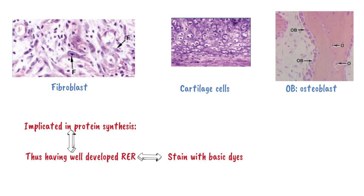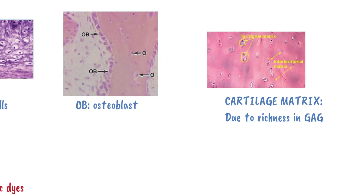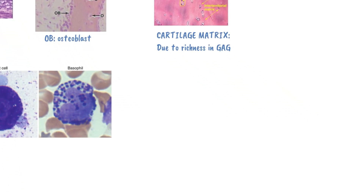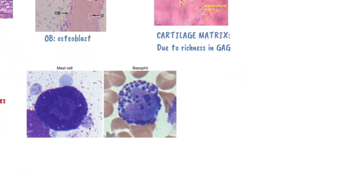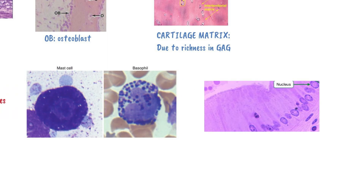That's why cells implicated in protein synthesis are basophilic — they usually stain with basic dyes. Other basophilic components include cartilage matrix due to richness in glycoproteins and glycosaminoglycans, basophilic granules in basophils (which is why they're called basophils), mast cells, and the nucleus — because the nucleus contains nucleic acids, which are negatively charged and thus stain with basic dyes.